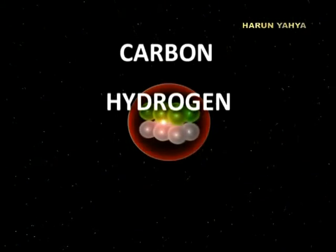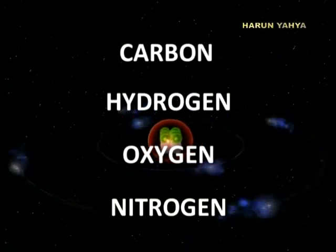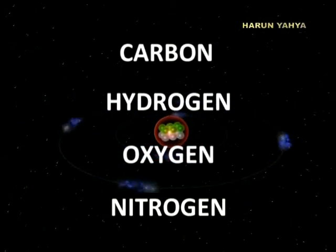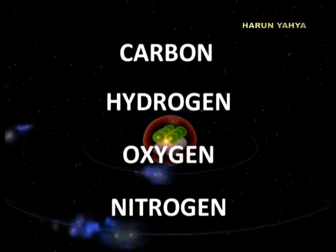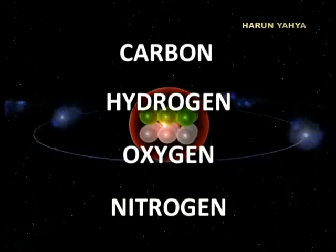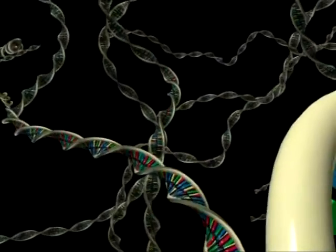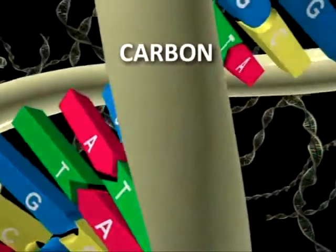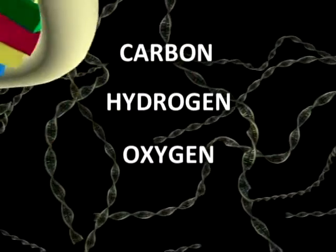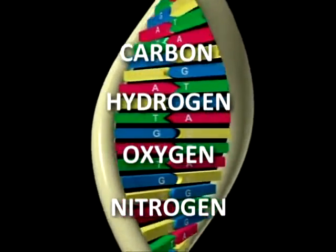When carbon builds bonds with hydrogen, oxygen, and nitrogen atoms, very important compounds once again result. The most important of these are amino acids, which form proteins — our body's building blocks. The nucleotides that make up DNA are also molecules made up of carbon, hydrogen, oxygen, and nitrogen. In short, the covalent bonds constructed by the carbon atom are among the most essential preconditions necessary for life. If carbon were unable to build covalent bonds with oxygen, nitrogen, and hydrogen, then life could not exist.